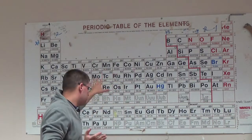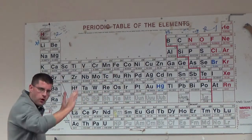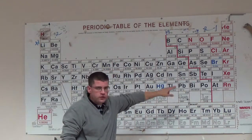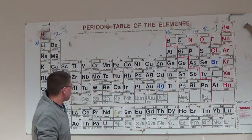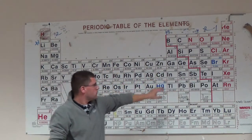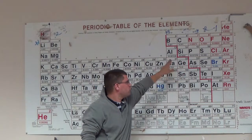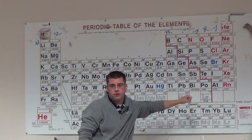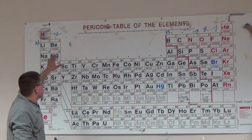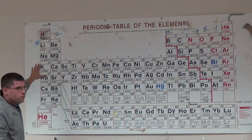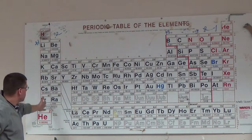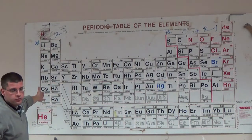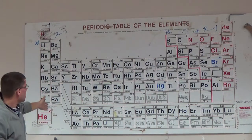Look at the periodic table. Let's go over the basics first. This right here is the zigzag. This separates all the metals from the non-metals, and eventually we'll get to something called metalloids, which are right on the boundary line. Over here, we've got the most reactive metals. These are called the alkaline metals. They have one valence electron — group one. Group two has two valence electrons.